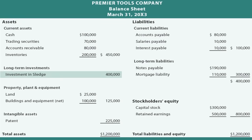Here's Premier the parent's balance sheet immediately prior to consolidating. Notice that among the typical assets there is a unique one in the long-term investment category: Investment in Sledge, $400,000. So on Premier's balance sheet we have all of the assets and liabilities that belong to Premier, with Premier's total equity of $800,000, and amongst its assets is that $400,000 investment — that's what Premier paid for all of the stock of the subsidiary company.